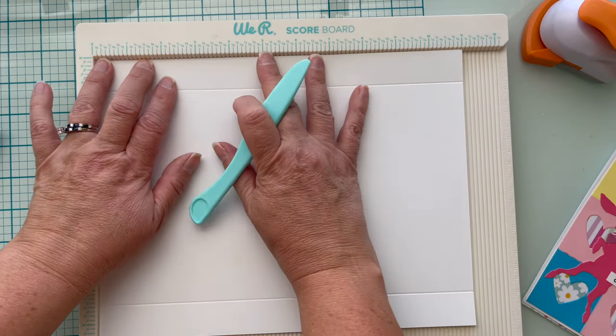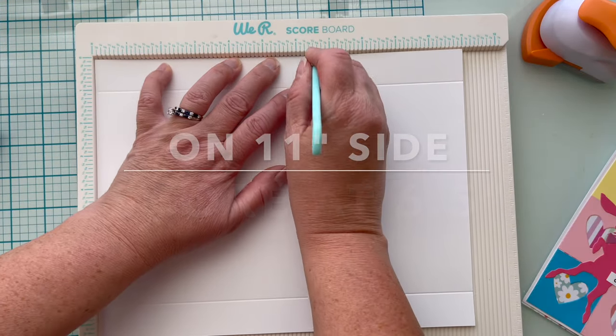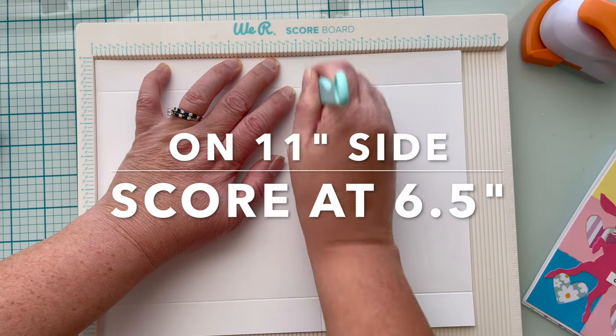Turn your cardstock to the eleven inch side and this time we're going to make one score line at six and a half inches.